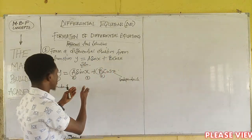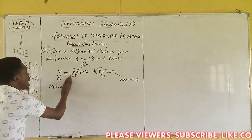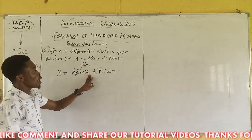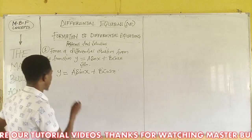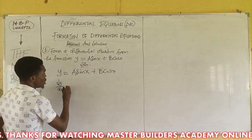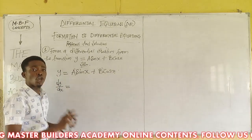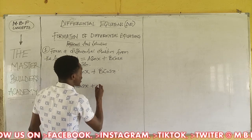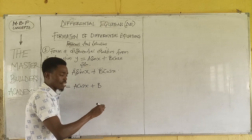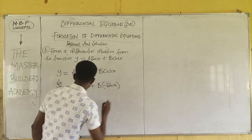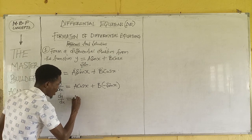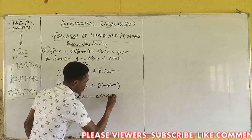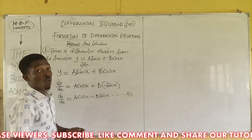Now let's get started with question number one. We have y = a sin x + b cos x. The first thing we do is differentiate. So dy/dx equals: differentiating sin x gives cos x, giving us A cos x; and differentiating b cos x gives minus b sin x. Therefore dy/dx = A cos x − B sin x. This is Equation 1.